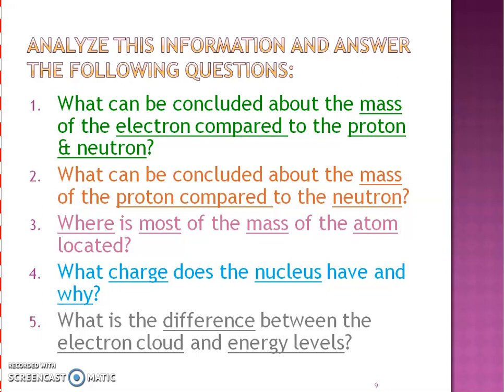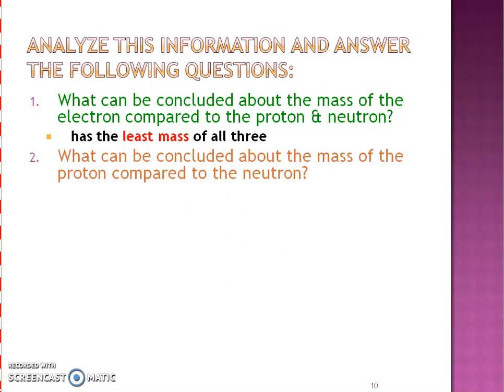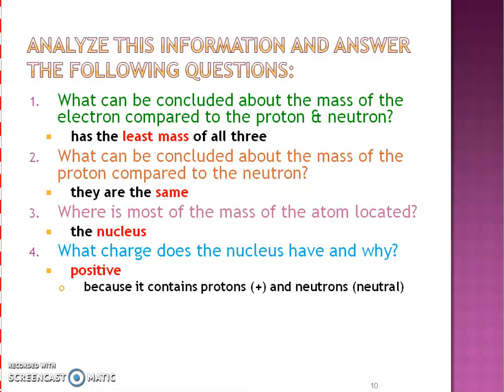Hopefully, you paused, you wrote down an answer, had some kind of thinking going on there, and now let's see if you can analyze it correctly. So number one's answer, the mass of that electron has the least mass of all three. How about the mass of the proton compared to the neutron? Well, those two are the same. So protons and neutrons equal the same mass, where the electrons are a heck of a lot less. Hopefully, that makes sense, especially when we're dealing with those mass numbers. Number three, most of the mass of the atom is located in the nucleus. If our protons and neutrons are heavy, and they're in the nucleus, then that's where most of the mass of the atom is. What charge does the nucleus have and why? It has a positive charge because it has positive protons and neutral neutrons. So a positive and a neutral would make it positive.